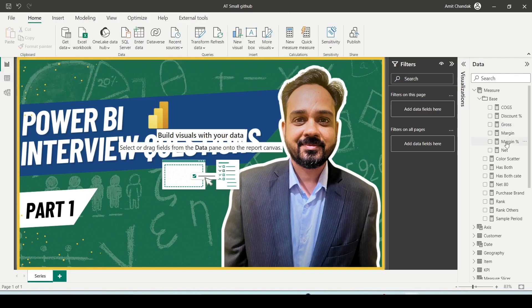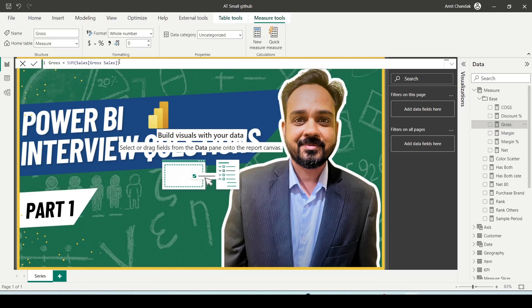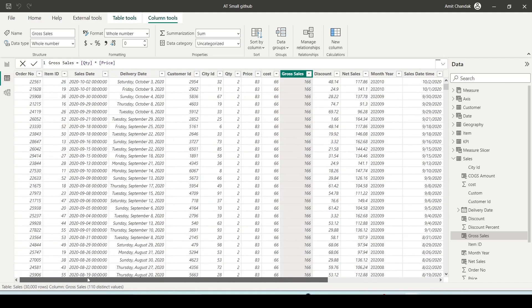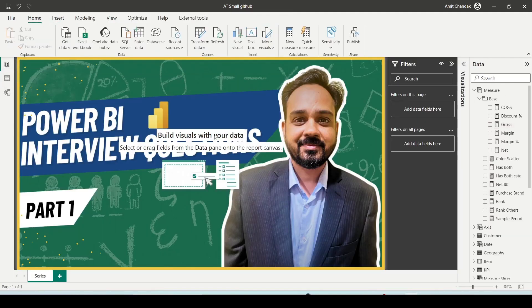Measures, on the other hand, can only be used in visuals - they are not visible in the table. Look at this gross calculation which I've done using the sales table. Measures typically belong to the model while calculated columns belong to a table, and they don't appear in any of the tables. If you look at my sales table, the measure is not appearing. Measure calculations are done at runtime - they are not static in nature.